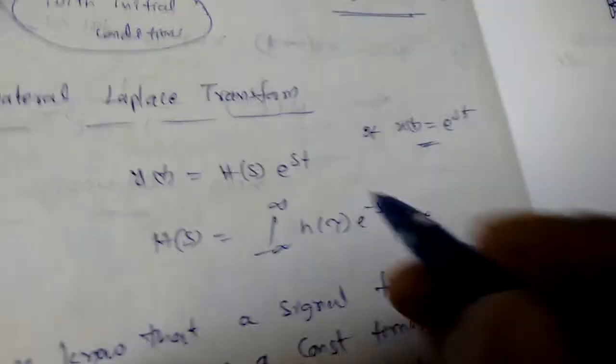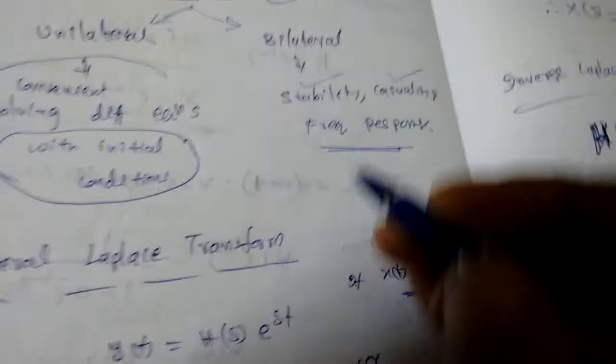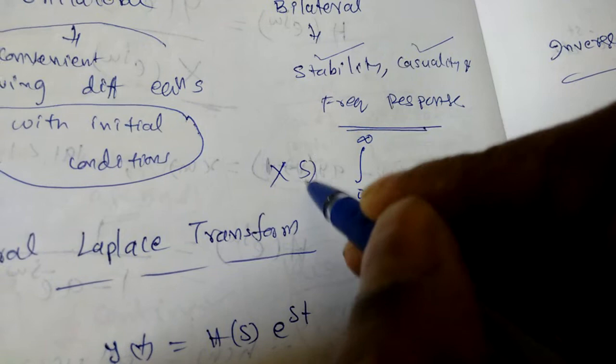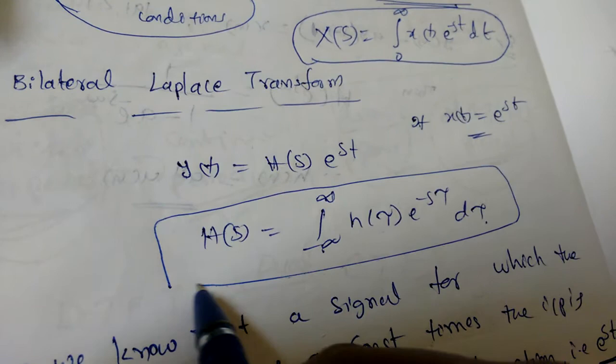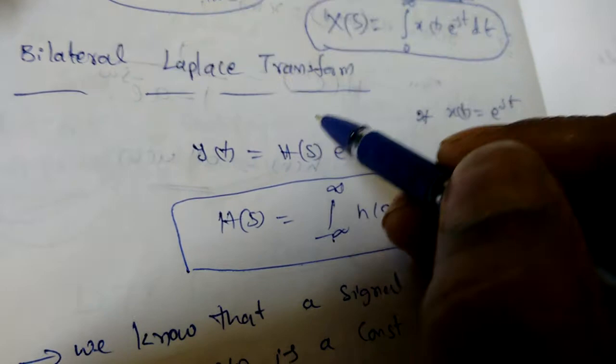First we will see the bilateral transform — there is very small difference from unilateral. Bilateral means we get limits from minus infinity to infinity, but unilateral means we get 0 to infinity. So X(s) equals the integral from 0 to infinity of x(t) times e^(−st) dt is the unilateral transform formula. The bilateral formula is X(s) equals the integral from minus infinity to infinity of x(t) times e^(−st) dt.